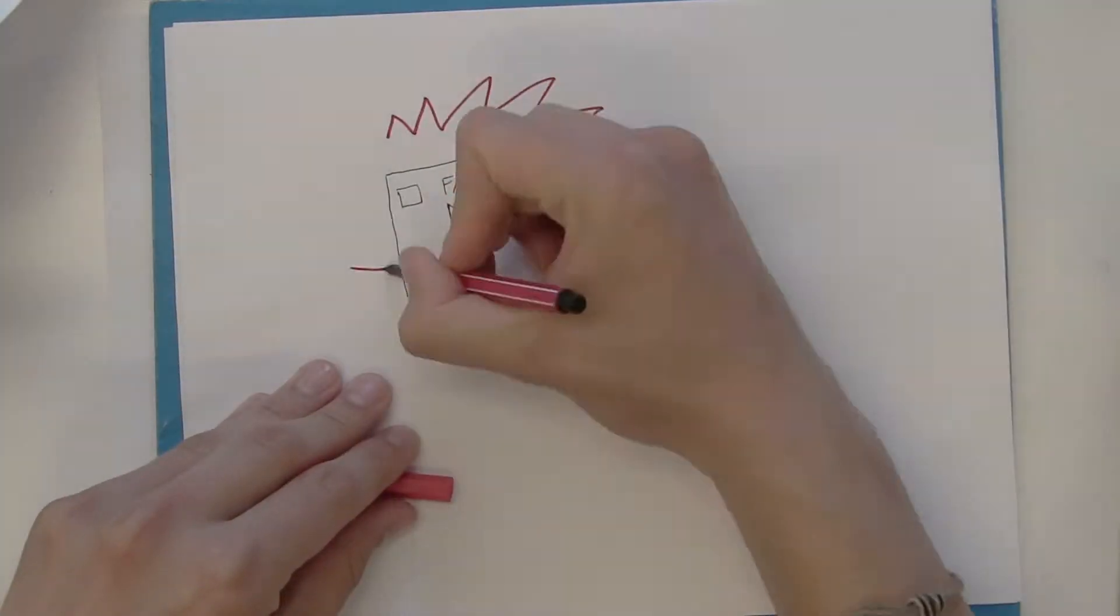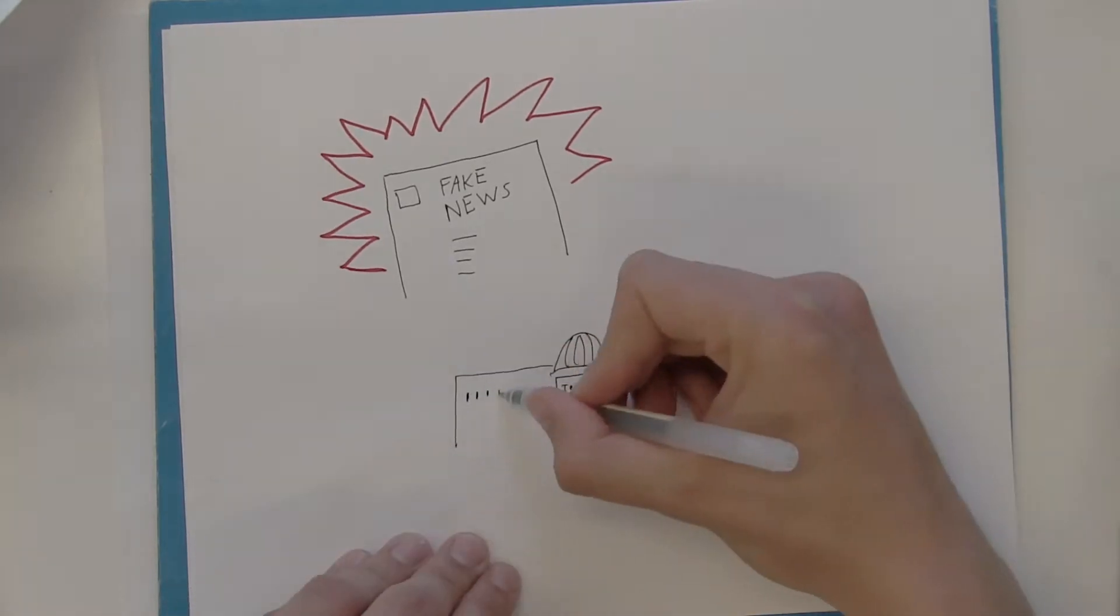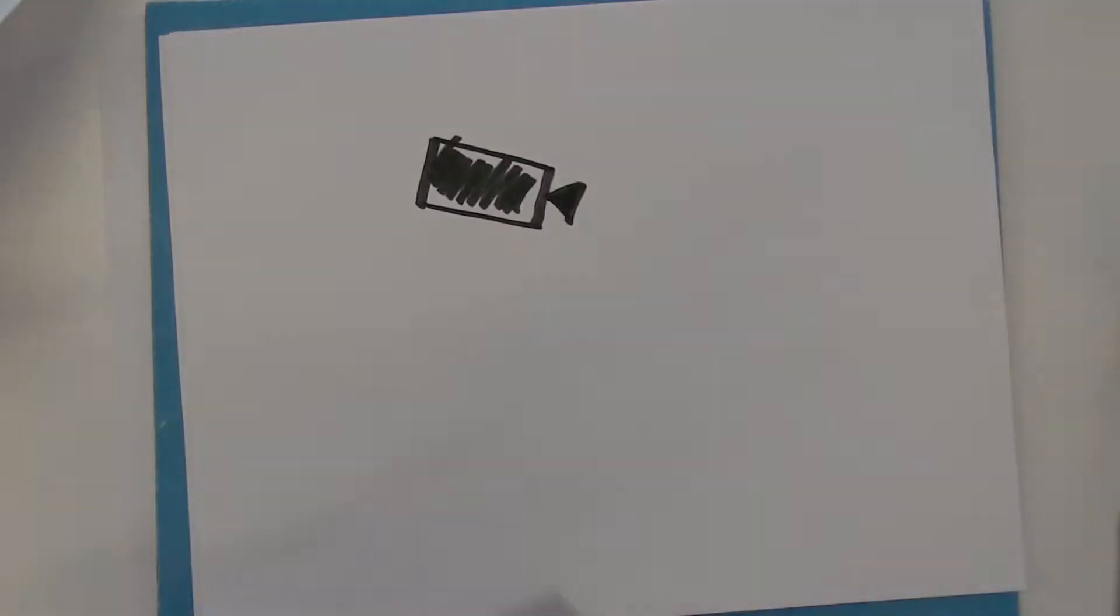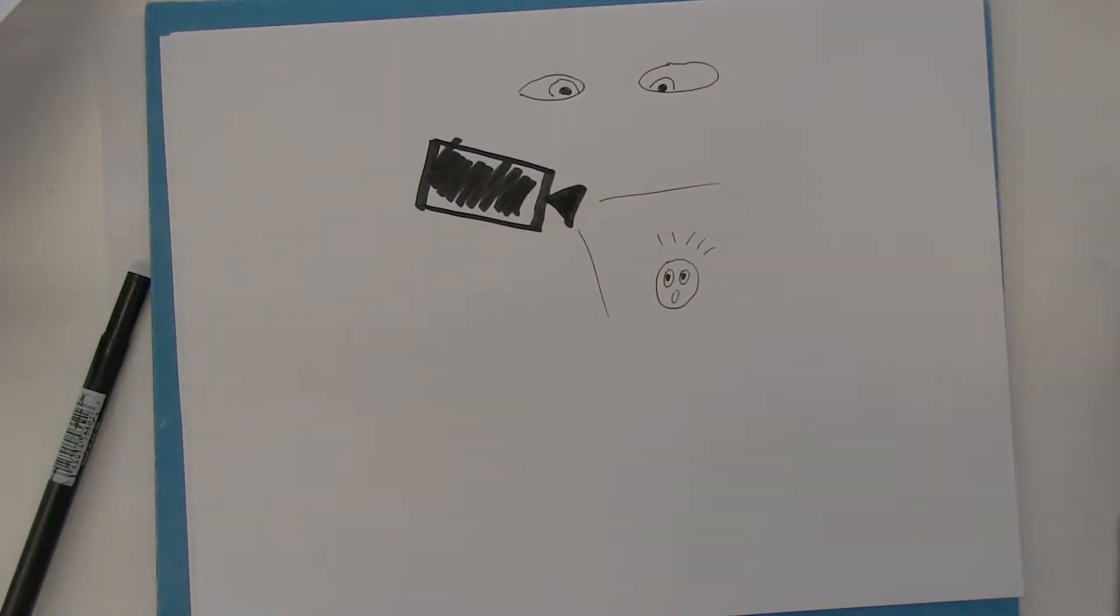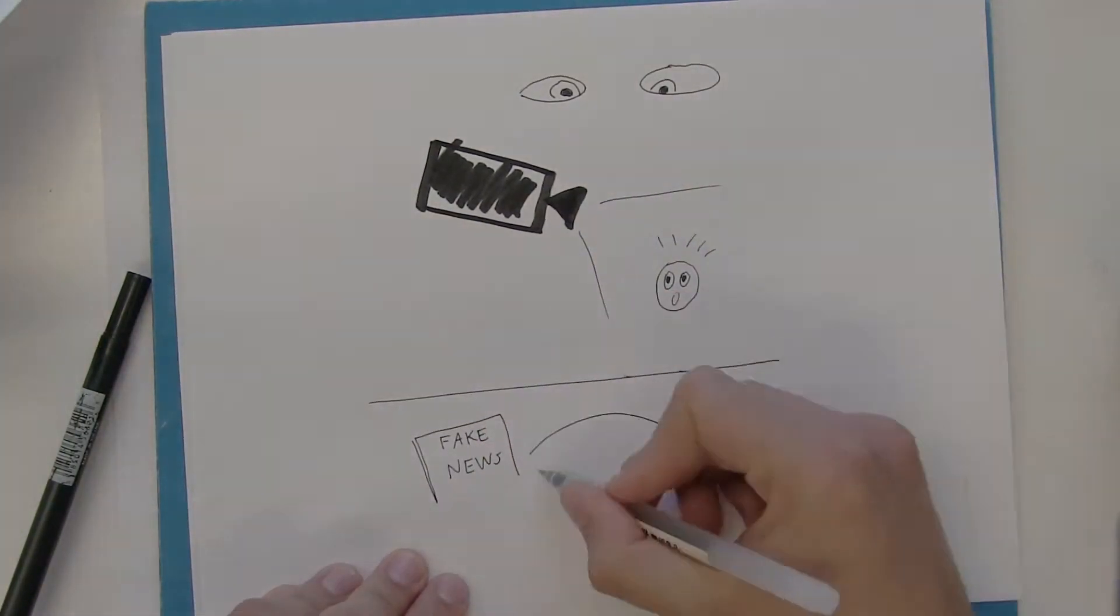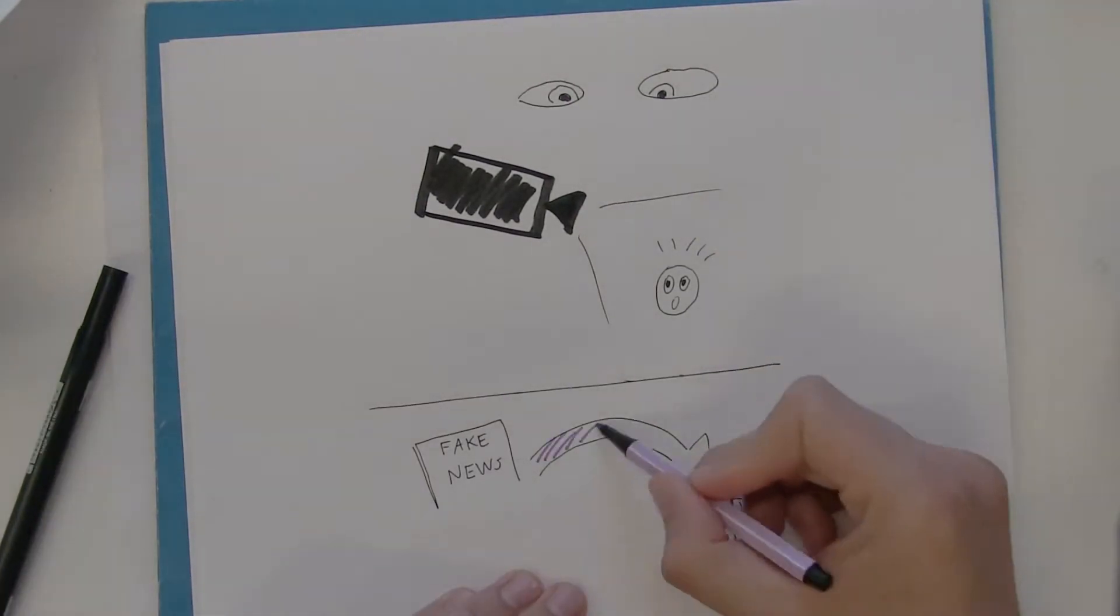As long as fake news is permitted in the media, governmental tolerance is defeating itself. While it may have something of a bad stigma, like Big Brother is watching, controlled government regulation is not necessarily a bad remedy to the infestation of fake news in our world today.